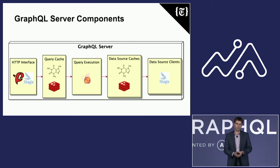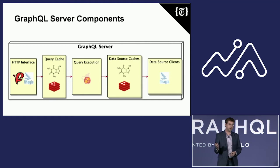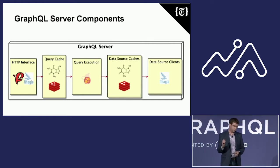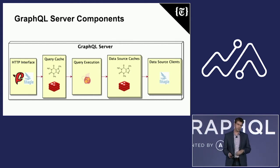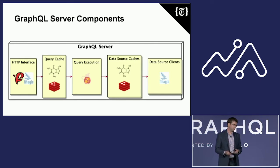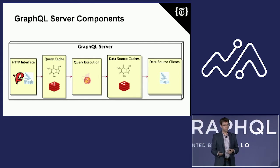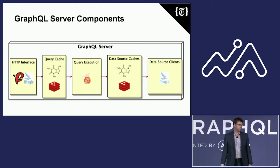This is what a GraphQL server instance looks like at the New York Times. On the left-hand side, our HTTP interface is written using Finatra and Finagle, which are open-source projects from Twitter. Then we have a layer of caching of the queries using Caffeine and Redis. In the middle of all that, we have Sangria, which is our Scala-based execution engine. And on the other side, we also have caching for each individual response we're getting from our data sources. Finally, we use Finagle to manage all the networking with our upstream data sources.